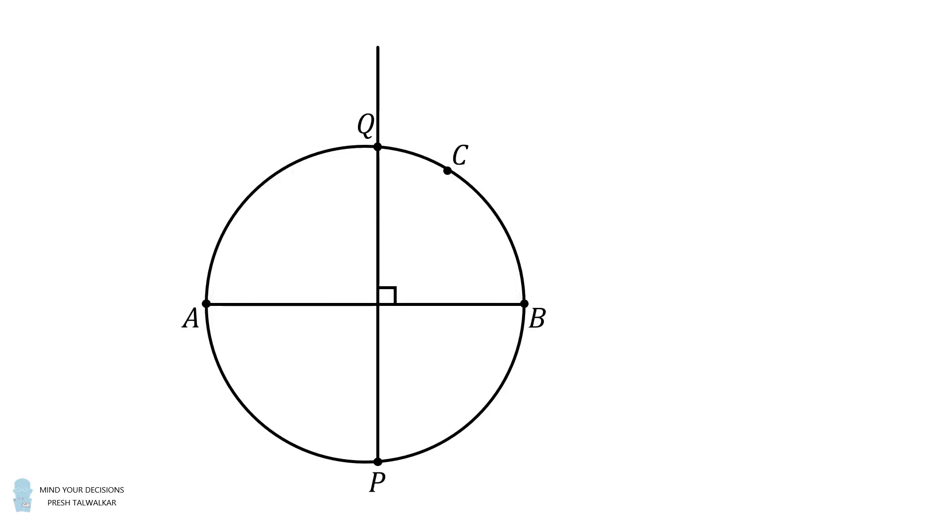So from here, we've already reflected the point Q across the diameter to the point P. We similarly want to reflect the point C across the diameter AB. So how do we do that? We will connect QC and extend the diameter AB until they meet at a point R.